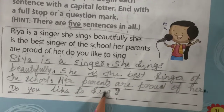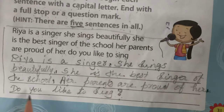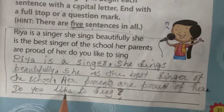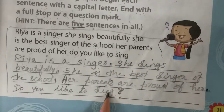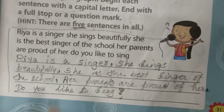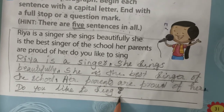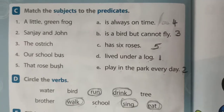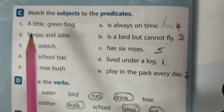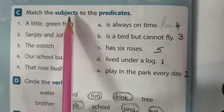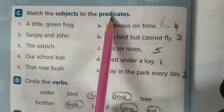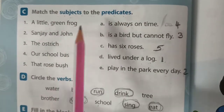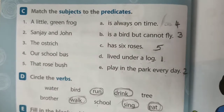'Do you like to sing?' — it is a question. Put the question mark at the end. 'Do you like to sing?' — that is why we are putting a question mark. Understand all of you?